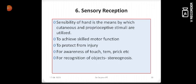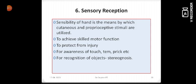Then the sensory reception of the hand. The sensibility of the hand is the means by which cutaneous and proprioceptive stimuli are utilized. Here we use hand to achieve skilled motor functions. We use them to protect ourselves from the injuries or for the awareness of touch, temperature, prick, etc. We also can recognize known objects without seeing it by the eyes with the help of hands. This function is also called as stereognosis.